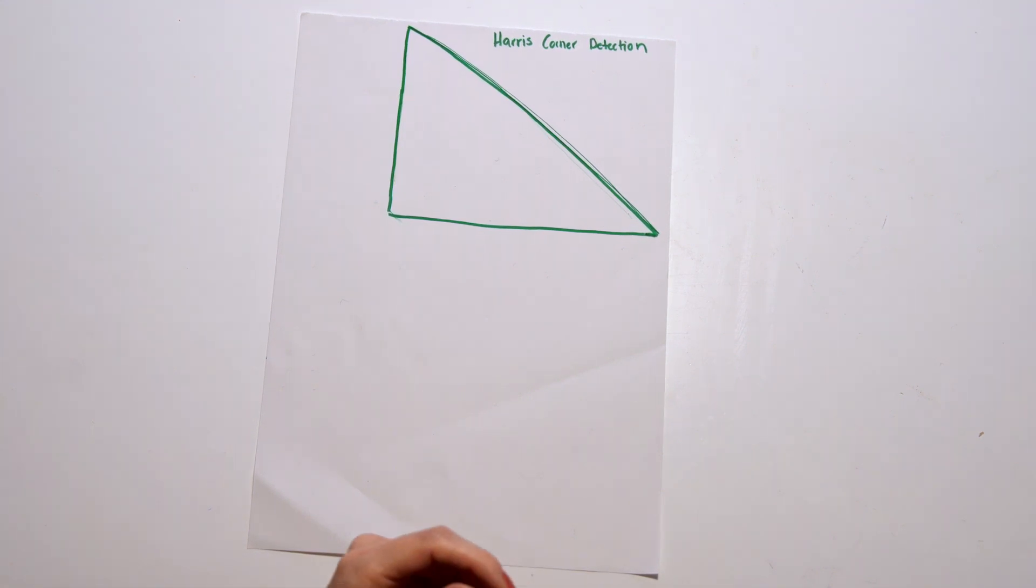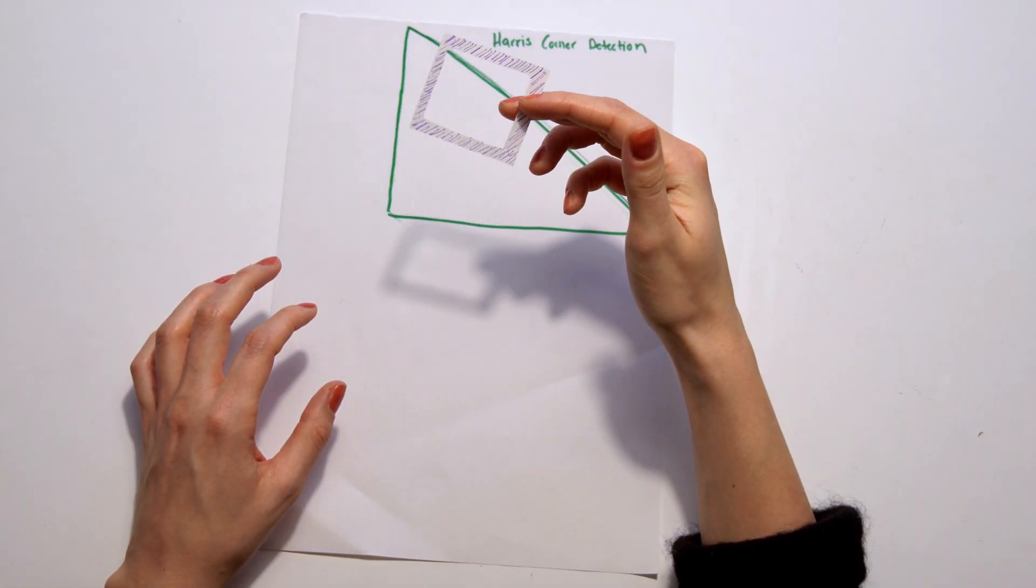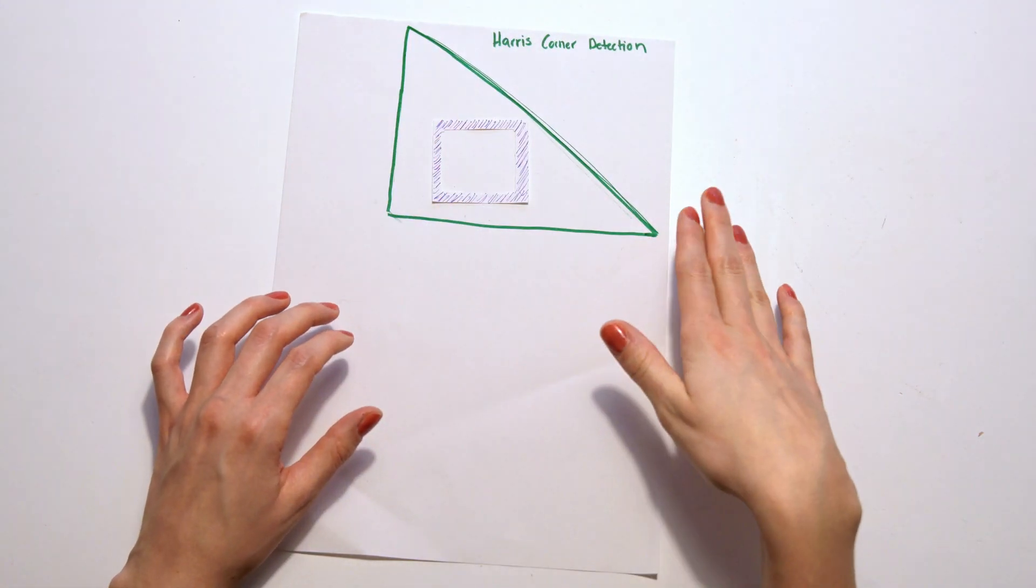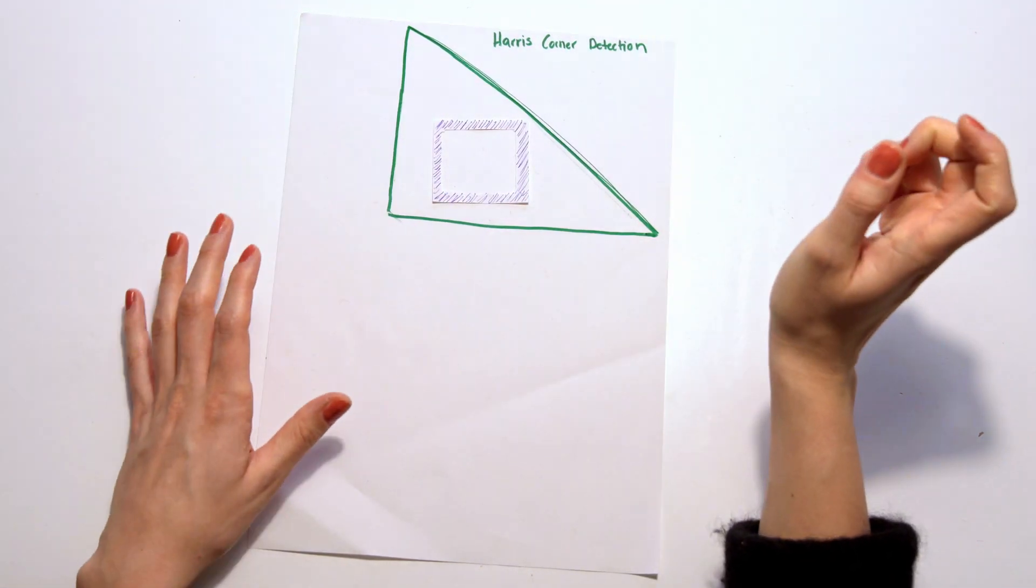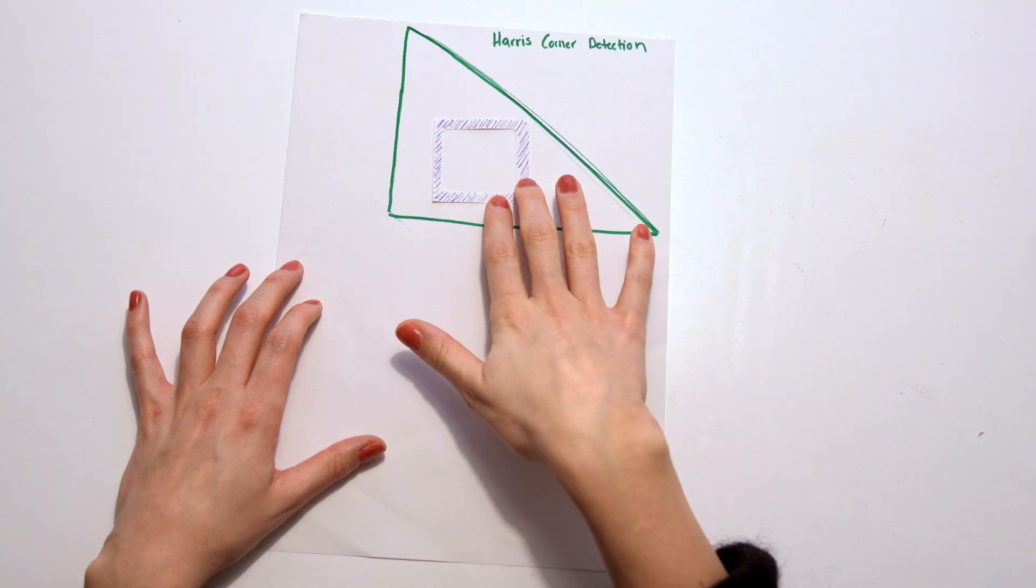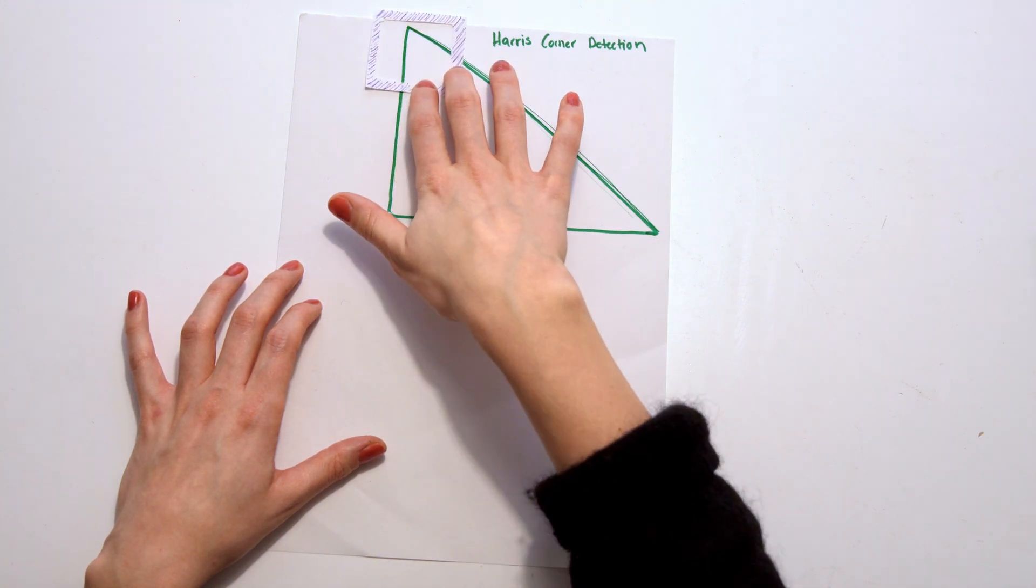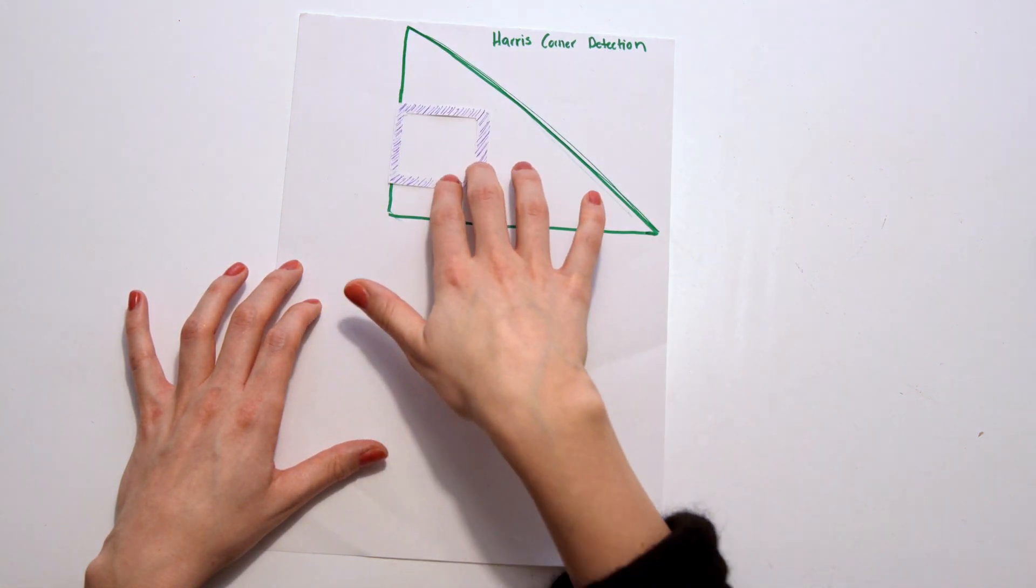The algorithm Harris corner detection, what it basically does is that you put a frame over your image. So let's say that this triangular shape is inside of an image, and you then have a window which you can move around in the image.